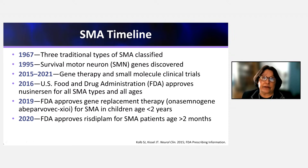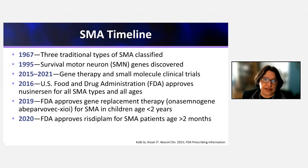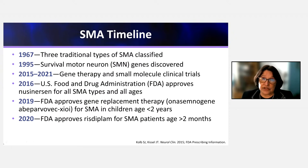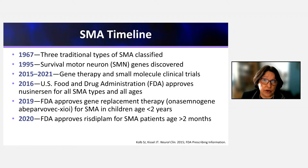Three years later, in 2019, the FDA approved onasemnogene abeparvovec-XIOI — the gene transfer therapy — for children with SMA. In the U.S., it is approved for children under two years of age; in Europe, under 20 kilos. More recently, in August 2020, the FDA approved risdiplam — initially for SMA patients greater than two months of age, and now available in the United States for patients of all ages.